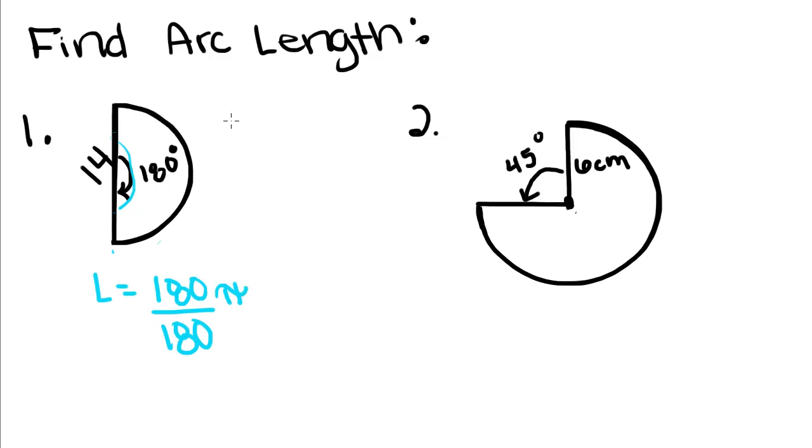If you remember, this is our diameter, and D is equal to 2 times R. So if you divide 14 by 2, you get R is equal to 7. So pi times 7. And that cancels to 1, so you get 7 pi is the length of this arc.